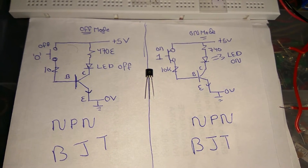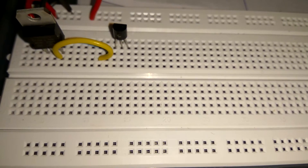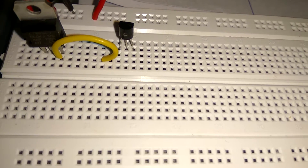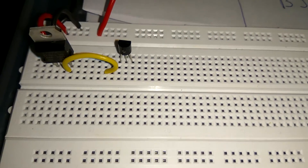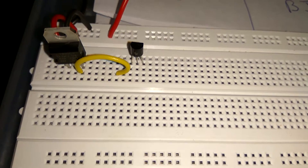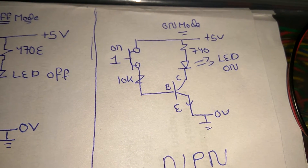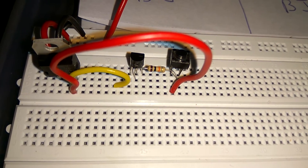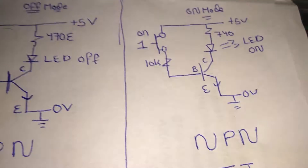Now it's time for the practical to prove this. First, I place the transistor in the breadboard with the head at the top and legs at the bottom. In that configuration, counting from the left, the first leg is emitter, the middle is base, and the last is collector. As shown in the diagram, the base is connected with a 10K ohm resistor and then to a switch, which is connected to 5V supply.